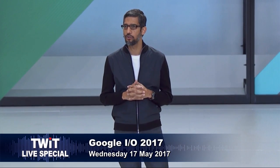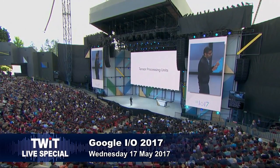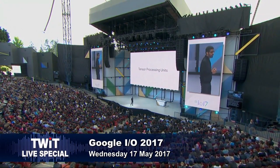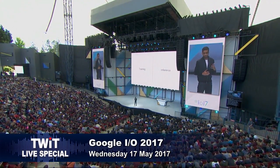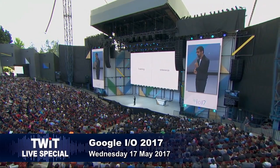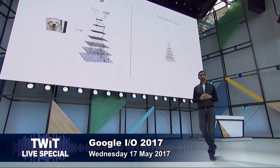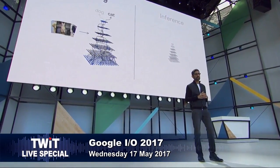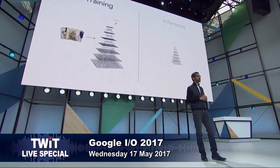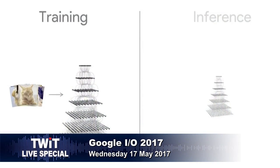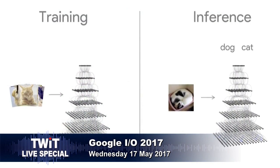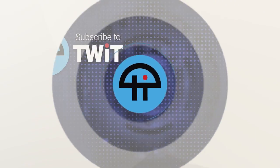Definitely an advantage for them. Machine learning has two components: training — how you build a neural net — which is very computationally intensive, and inference — what you do in real time so that when you show it a picture, it can recognize whether it's a dog or a cat and so on.